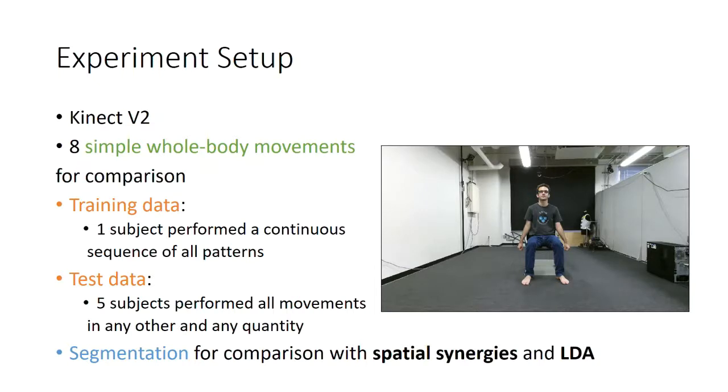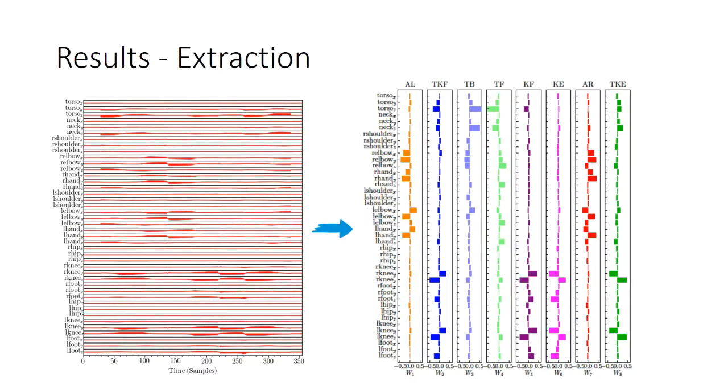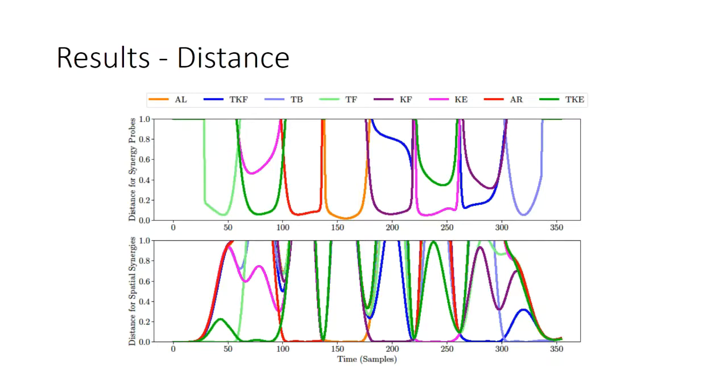For comparison, we also segmented the data so that we could compare it with the algorithm for spatial synergy and also with linear discriminant analysis. First, we extracted the synergies from the normalized data. Since we wanted to compare with the other algorithms, we extracted eight synergy probes. Then we calculated the distance for synergy probes and for the sets of spatial synergies.